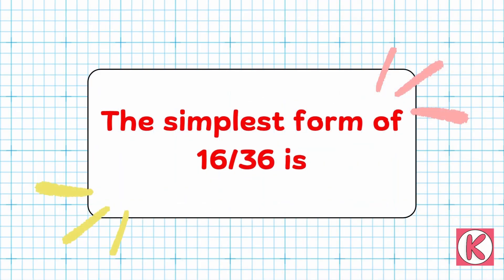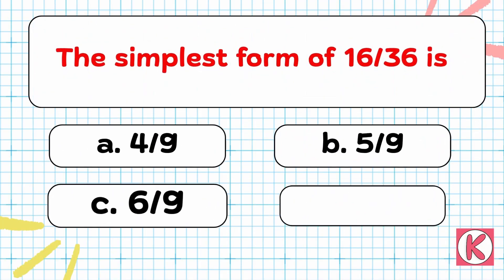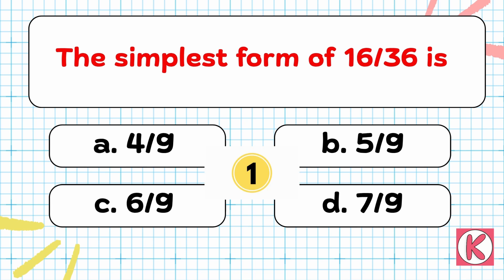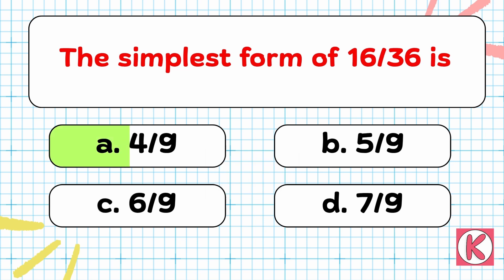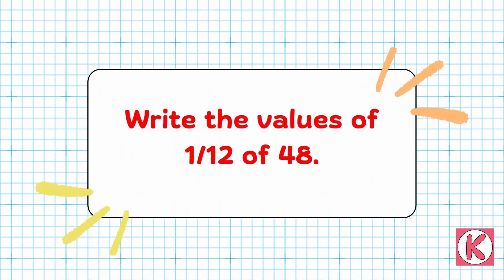Question No. 3. The simplest form of 16 by 36 is... Correct answer: Option A — 4 by 9.